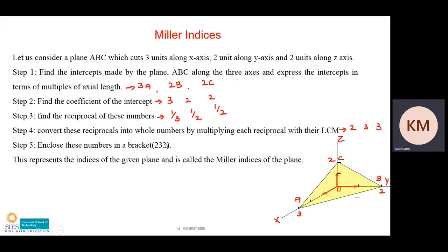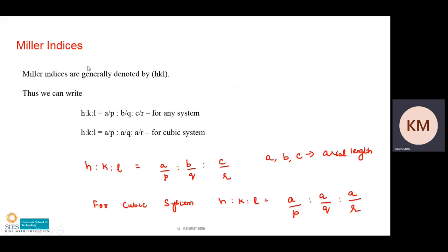Enclose these numbers within closed parentheses — so this now represents the Miller indices (2 3 3). To summarize: given a plane, find the intercepts along the three axes (here 3a, 2b, 2c), find the coefficients, take the reciprocals, convert to whole numbers by multiplying with the LCM, and enclose those numbers within parentheses. This gives the Miller indices of that particular plane.